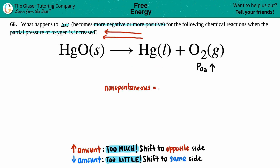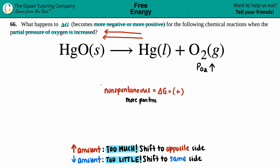Non-spontaneous is always linked with delta G being a positive value. So what's going to happen to the delta G? Is it going to become more positive or more negative? It's definitely going to become more positive. And that is the answer to this question.